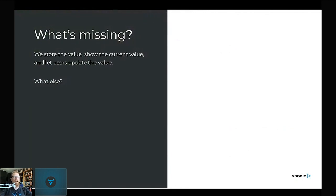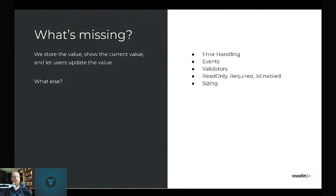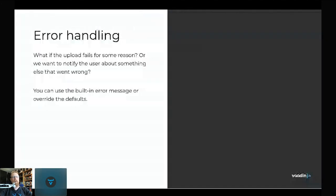So what's missing? We store the value, show the current value, and let users update the value. There are optional things you can add that the framework doesn't force you to implement, but many are useful: error handling, custom events, validators, and the read-only, required, and enabled features. Let's go through how to implement each of these.